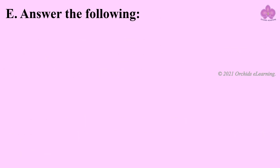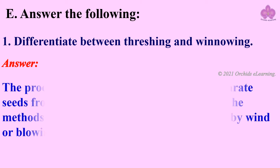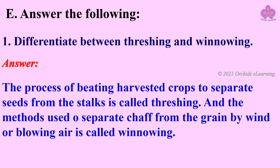Answer the following: Differentiate between threshing and winnowing. Answer: The process of beating harvested crops to separate seeds from the stalks is called threshing. The method used to separate chaff from the grain by wind or blowing air is called winnowing.